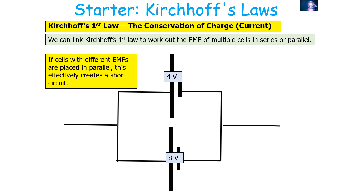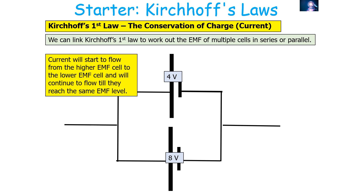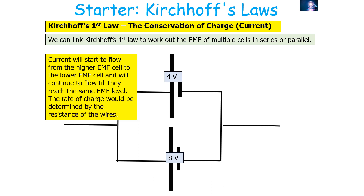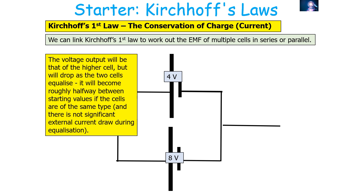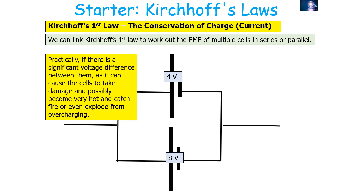This won't come up in an A-level examination, but if cells with different EMFs are placed in parallel, this would effectively create a short circuit. The current would start to flow from the higher EMF cell to the lower EMF cell until they reach the same EMF level; the rate of charge moving is determined by the resistance of the connecting wires. The voltage output starts at the higher cell's value but drops as the two cells equalize. Practically, this is never done in the real world because a significant voltage difference between parallel cells can cause damage, overheating, fire, or even explosion from overcharging.